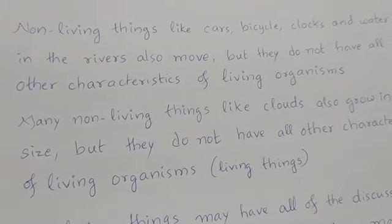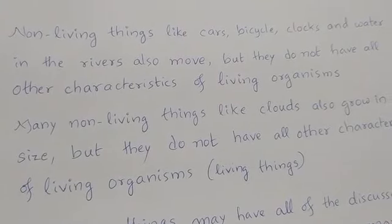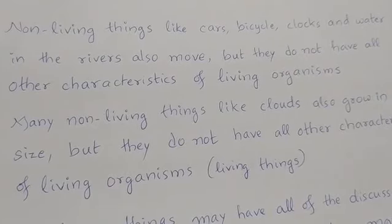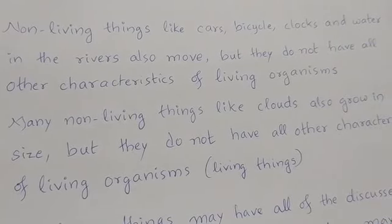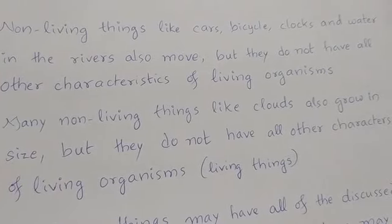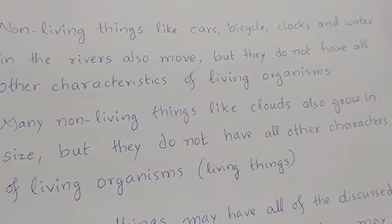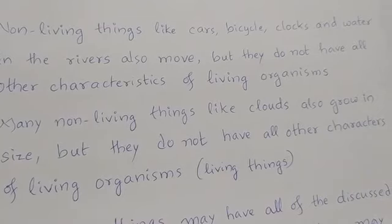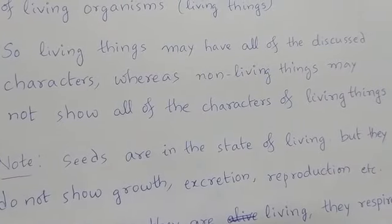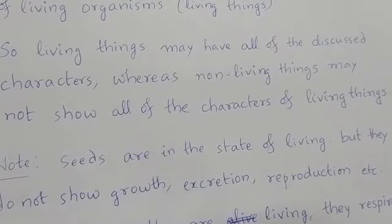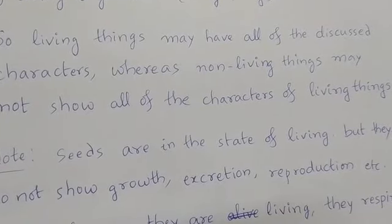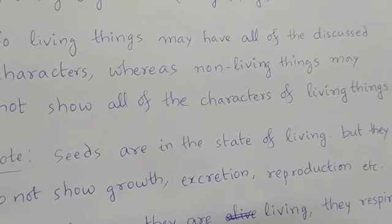If you take non-living things like cars, bicycles, clocks, and water in rivers, they also move, but they do not have all the other characteristics of living organisms. Many non-living things like clouds or trains may increase in size when bogies are added, but they do not have all the other characters of living things. So we can conclude that living things have all the characteristics discussed, whereas non-living things may show only one or two characteristics, and even those are induced by humans.